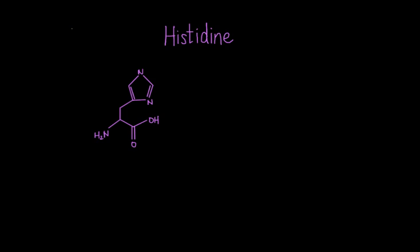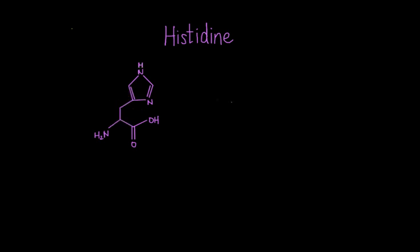First up, we have histidine. Here is the structure of histidine — the backbone is the same for all amino acids, and then here is the side chain of histidine. What is so special about histidine? Well, this side chain has a pKa of around 6.5, which turns out to be really close to physiological pH, which is right around 7.4.